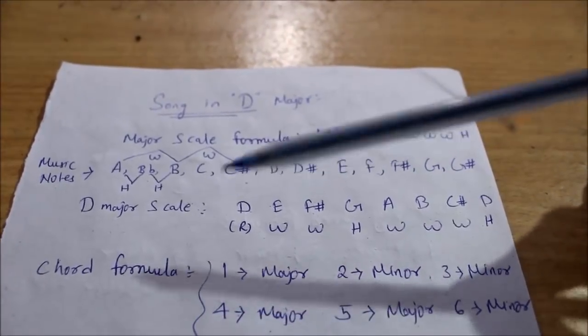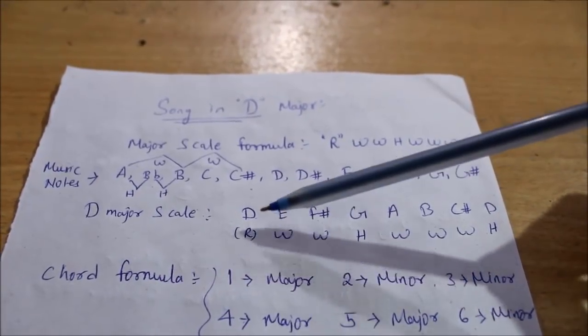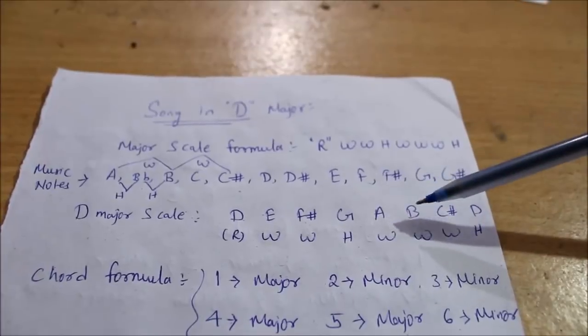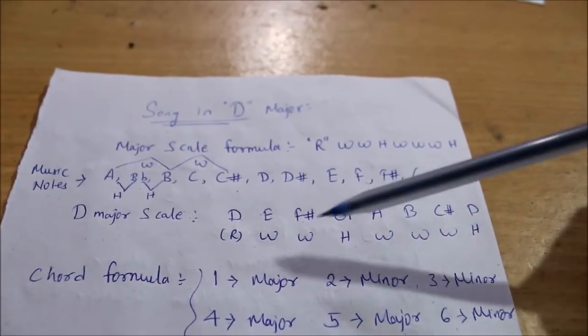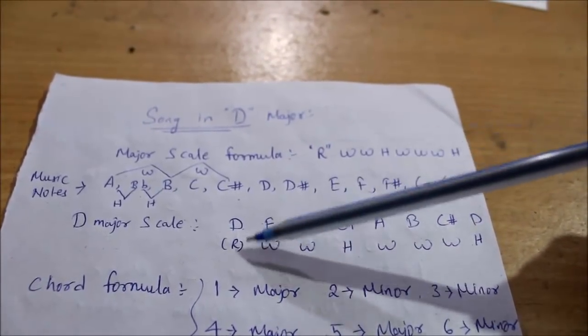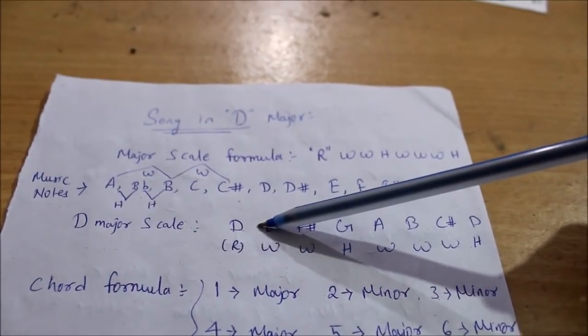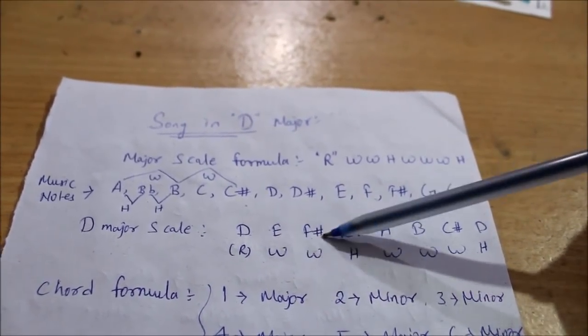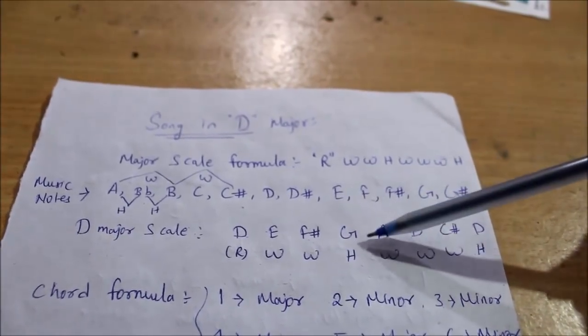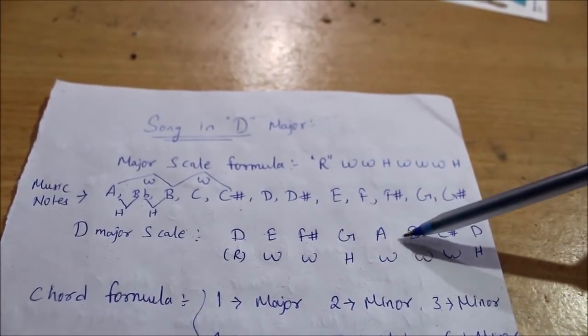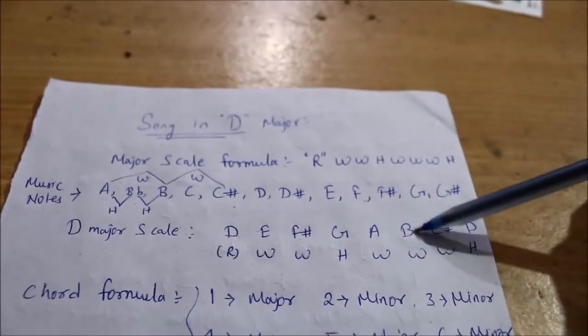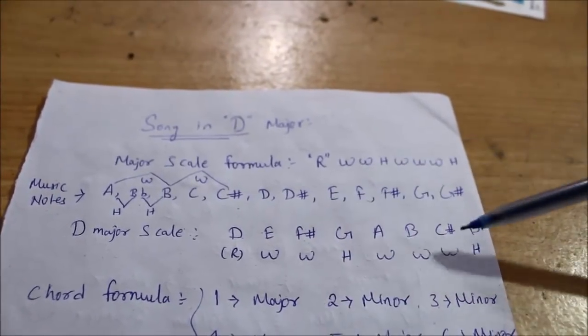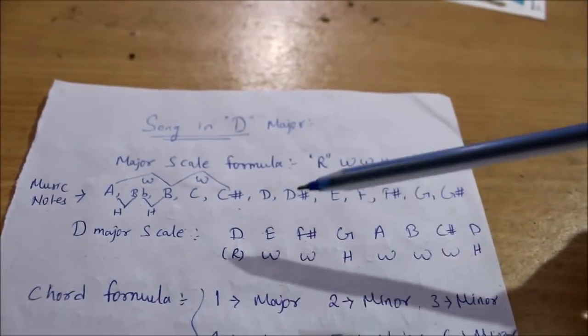Here you can see the D major scale formula. The root note is D, then E, F#, G, A, B, C#, D. If we check the intervals: D is root, then a whole note difference to E, then F# is whole, G is half, A is whole, B is whole, C# is whole, then C# to D is half. So here you have the notes of the D major scale.